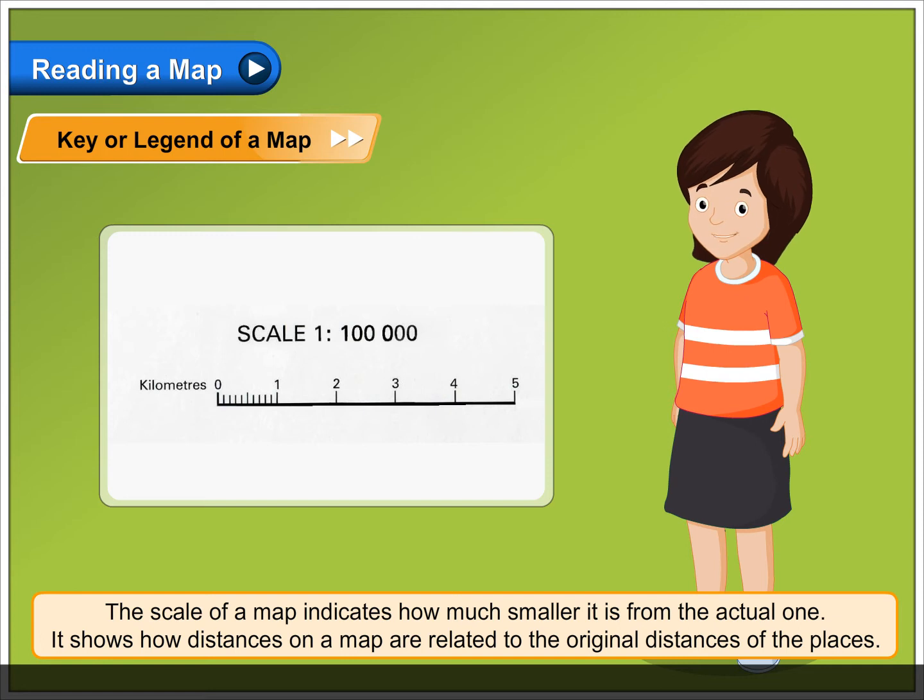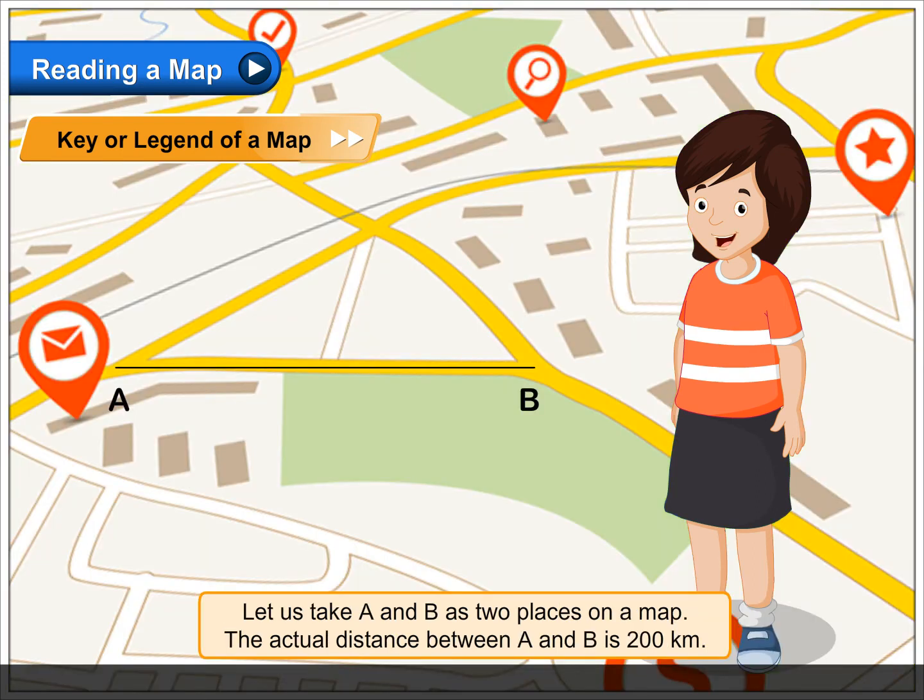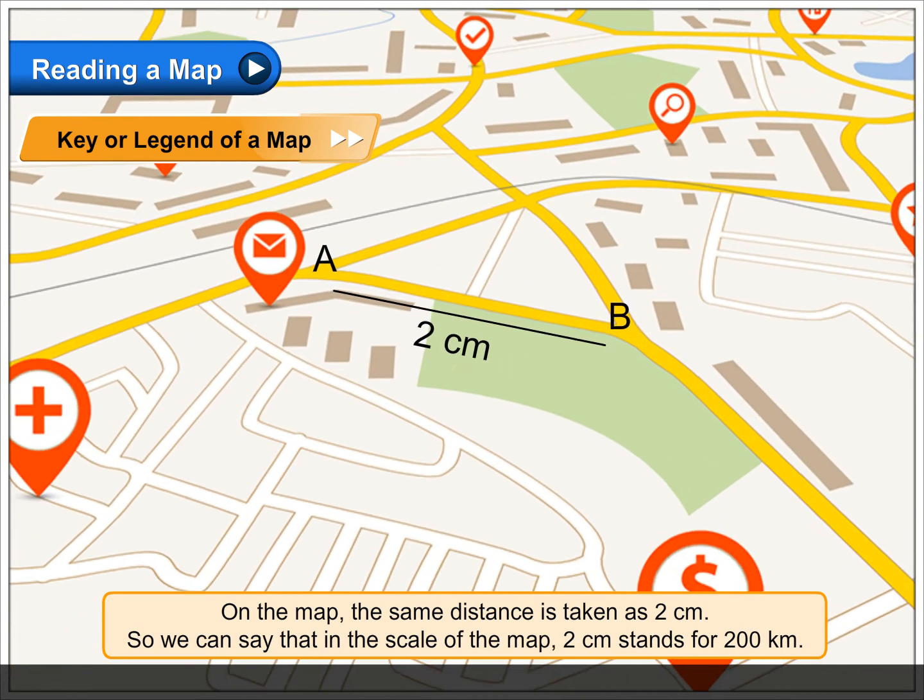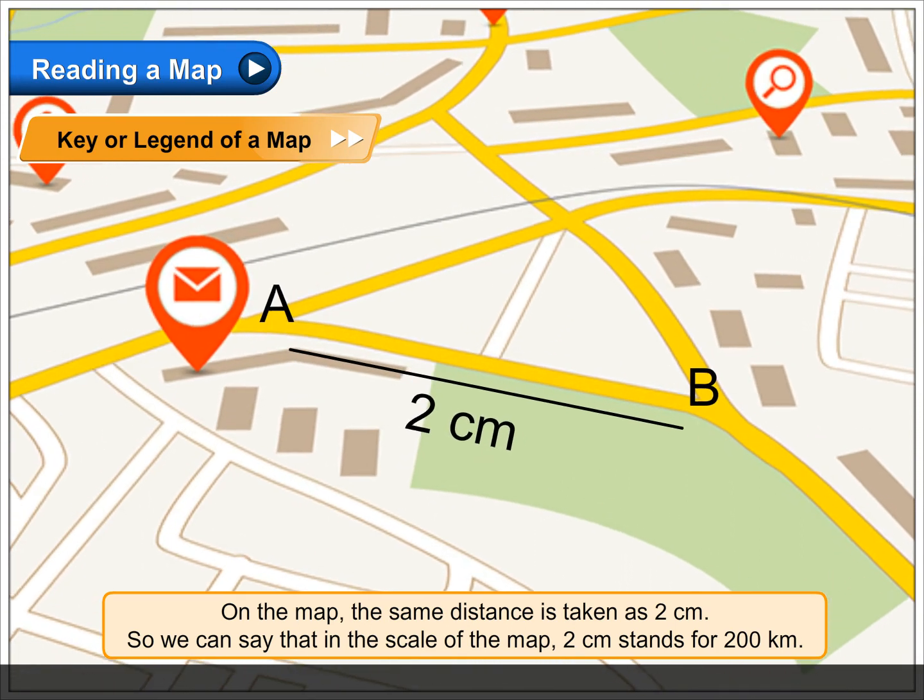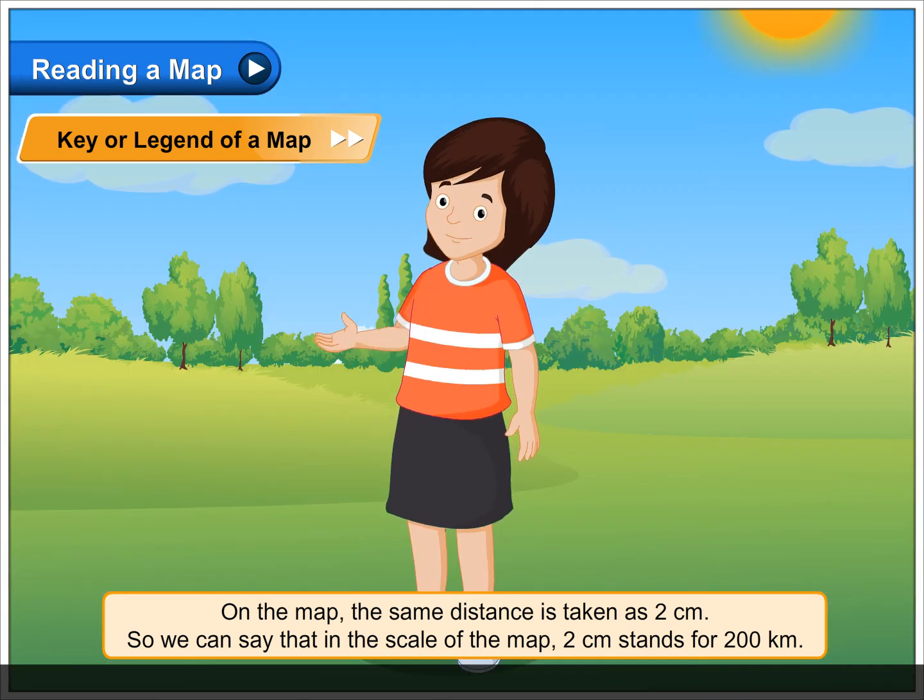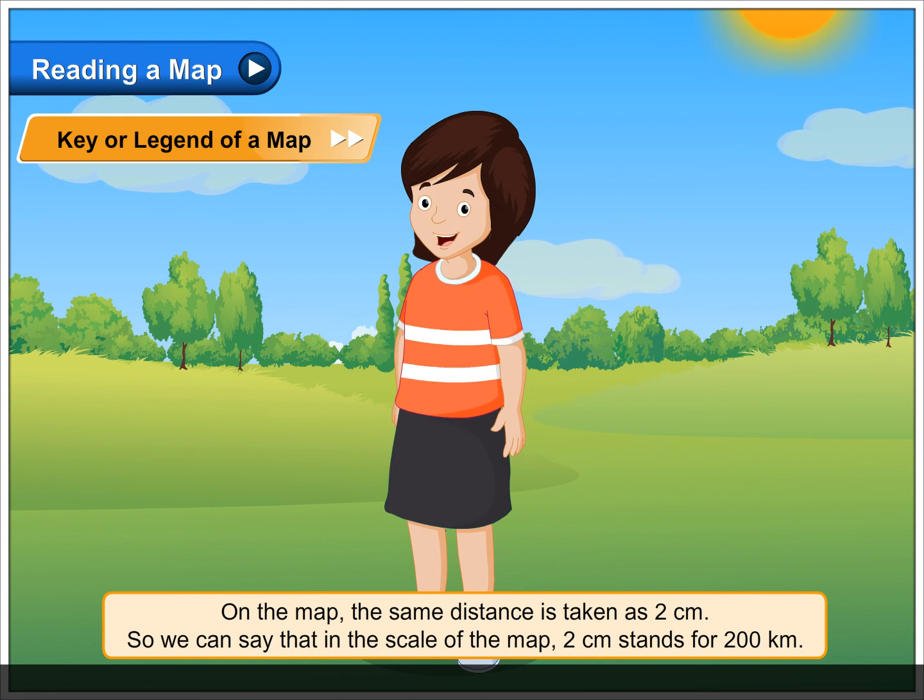It shows how distances on a map are related to the original distances of the places. Let us take A and B as two places on a map. The actual distance between A and B is 200 km. On the map, the same distance is taken as 2 cm. So we can say that in the scale of the map, 2 cm stands for 200 km.